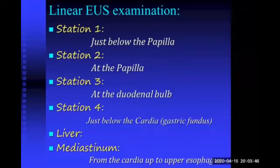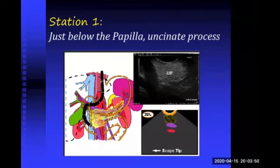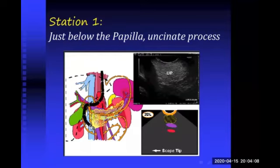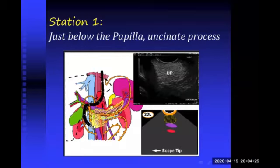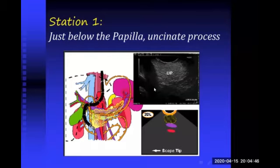Station one is just below the papilla. The aim is to visualize the uncinate process of the pancreas. Here the echoendoscope is just below the papilla. At this position, I start upward deflection of the tip of the echoendoscope - the big wheel is moved towards my body - to direct the probe towards the uncinate process. Our landmark here is the abdominal aorta appearing as a longitudinal structure. When I see the aorta as a tube, I am correctly examining station one.